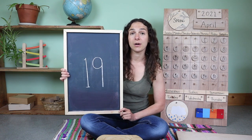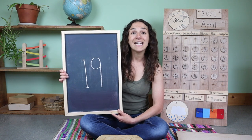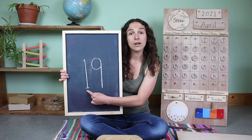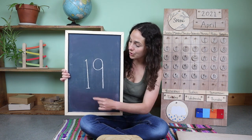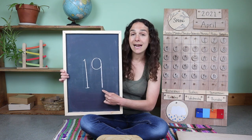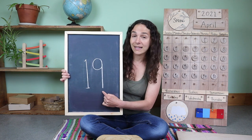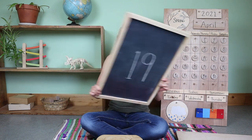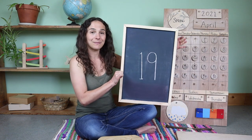Here we have a double digit number. Do you know what number this is? 19 — that's right. When you write the number 19, you write this number first — can you show me with your finger what number this is? One. And after you write the number one, you have to write this number — will you show me with your fingers? Nine. 19.